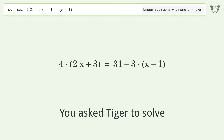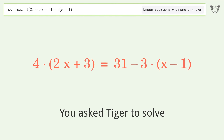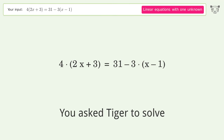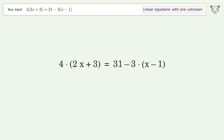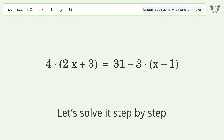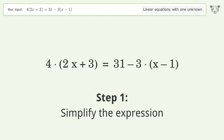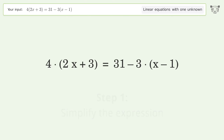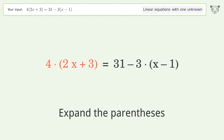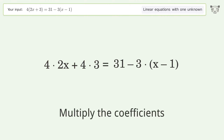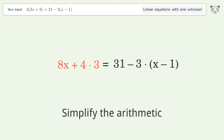You asked Tiger to solve this — it deals with linear equations with one unknown. The final result is x equals 2. Let's solve it step by step: simplify the expression, expand the parentheses, multiply the coefficients, simplify the arithmetic.